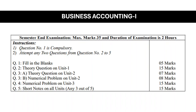What will be the question paper pattern? Question No. 1 is fill in the blanks on all units, and that is for 5 marks. Fill in the blanks will be asked on all units and these carry 5 marks. Then Question No. 2 is a theory question on Unit No. 1 — that is accounting concepts, conventions, and introduction to accounting — and that is for 15 marks.